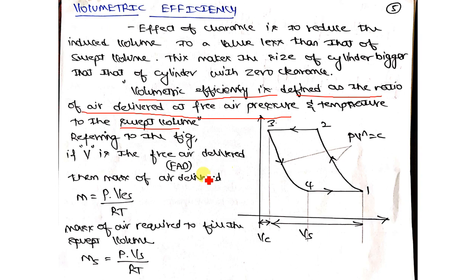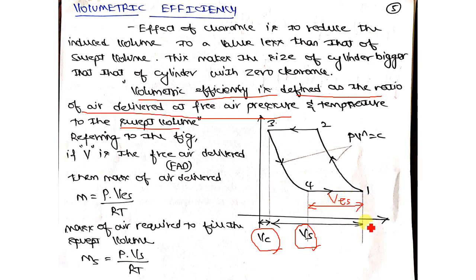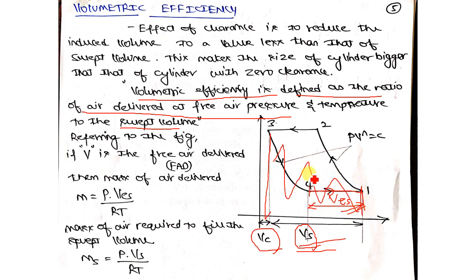Referring to the PV diagram: this is your clearance volume, this is your swept volume, and from point 1 to 4 is your Ves — the exact swept volume. Ves is the exact swept volume, meaning only this much volume occurs during the suction stroke. This amount of volume has been sucked within the suction stroke. However, the piston moves through the whole swept volume from end to end — that is the swept volume — but precisely, only Ves of air is being sucked, so it is called the exact swept volume.